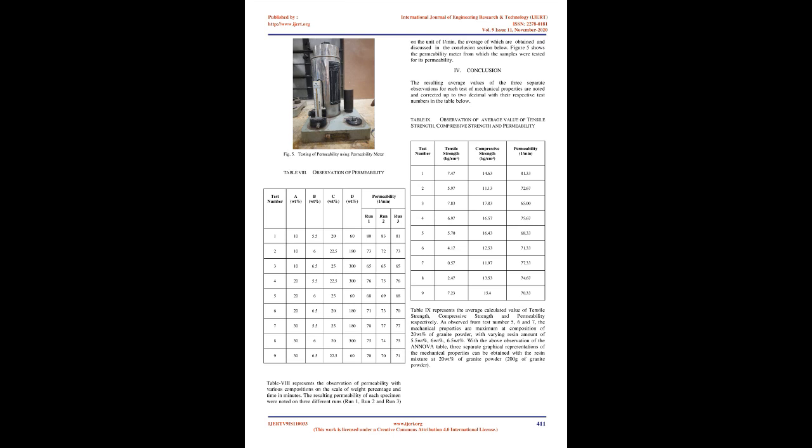Tensile Strength: The tensile strength for all 9 different test runs were conducted through specimens with standard ASTM dimensions, with varying composition of decomposed granite, resin, hardener and setting time. A total of 3 separate tensile strength tests were performed on each test run specimen to estimate the average of the respective mechanical property. The notations for the composition are: A represents decomposed granite, B represents resin, C represents hardener, and D represents the setting time. Table 6 represents the observation of tensile strength with various compositions on the scale of weight percentage and time in minutes. The resulting tensile strength of each specimen was noted on three runs (run 1, run 2 and run 3) in units of kg/cm², the averages of which are discussed in the conclusions section. Figures 1 and 2 show the tensile test specimen and universal tensile strength machine used to perform the experiment.